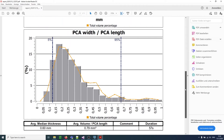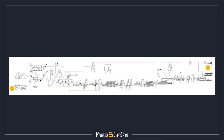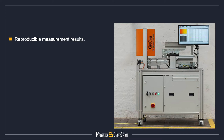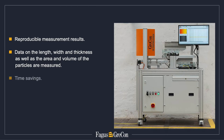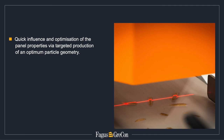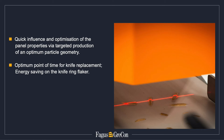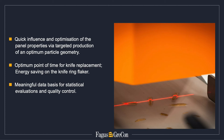The 3D Particle View is preferably used in the laboratory or in the machining control room, where distances are short and the data obtained can be used immediately. The convincing benefits include consistent measuring results as operator influence is eliminated, data on all three dimensions of the particles, enormous time savings as measurement is fully automatic, quick influence on the cutting process and thus on the particle geometry, and optimization of the point in time when changing the knife rings. The available data can be combined with other process data and used for statistical evaluations and quality control.